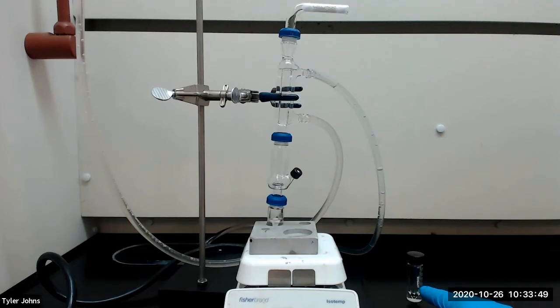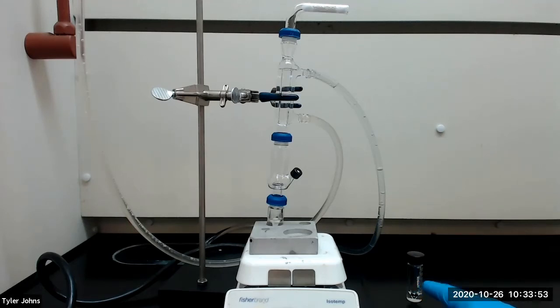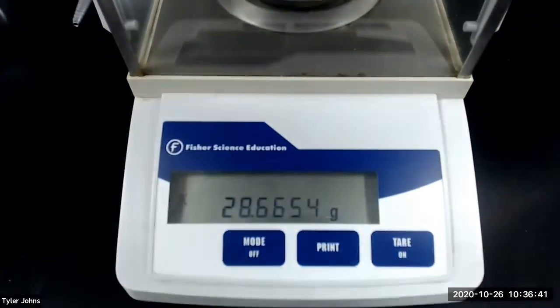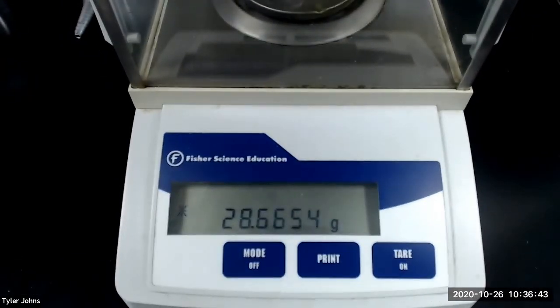We will now pre-weigh the conical vial that we will be using to collect our T-pentyl chloride distillate. The mass of the conical vial that we will be using to collect our T-pentyl chloride distillate is 28.6654 grams.